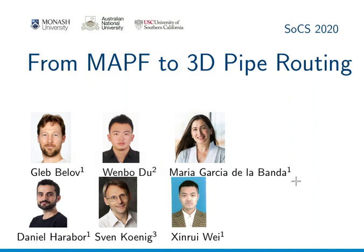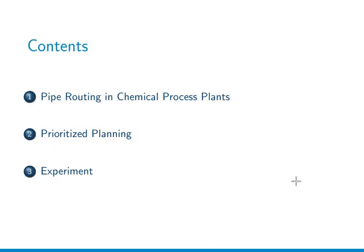From multi-agent pathfinding to three-dimensional pipe routing — this is a joint result with Wenbo, Maria, Daniel, Sven, and Shinrui. We talk about pipe routing in the context of chemical process plants, then we adapt prioritized planning to this problem and conclude with experimental results.